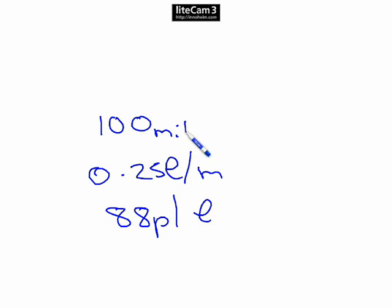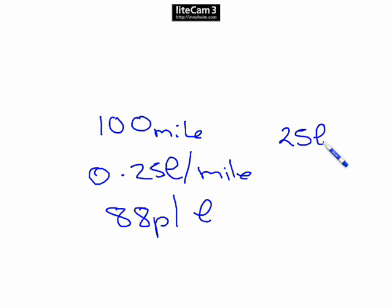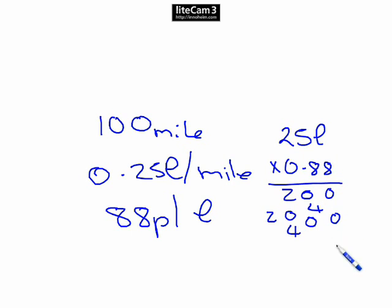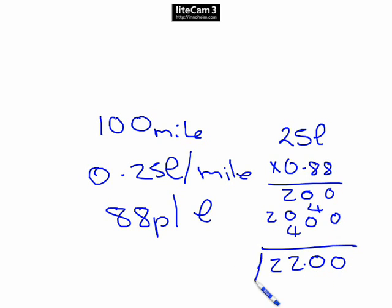We've got a 100-mile journey using 0.25 litres per mile at 88 pence per litre. 100 times 0.25 — move the decimal point — gives us 25 litres used. Then 25 times 88 pence: 8 fives are 40, carry 4, 8 times 2 is 16 plus 4 is 20; then 8 fives are 40, 8 times 2 is 16. That gives us 2,200 pence. Put the decimal point back in, and our answer is 22 pounds.